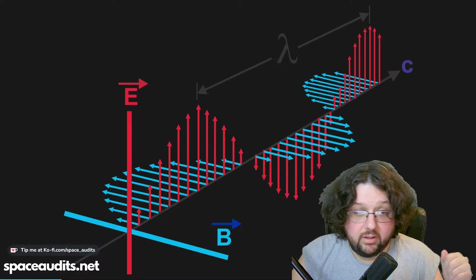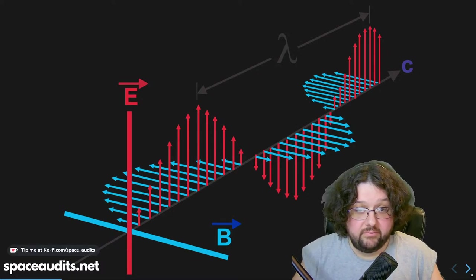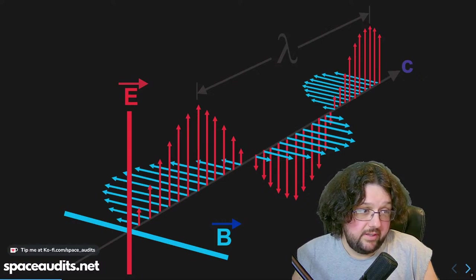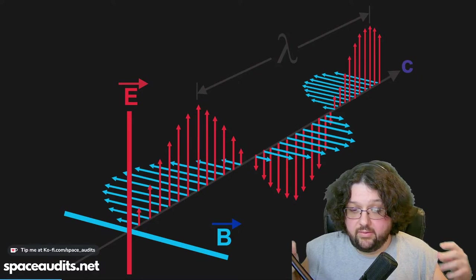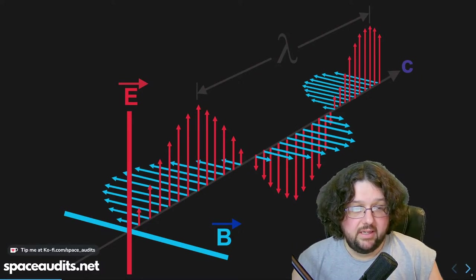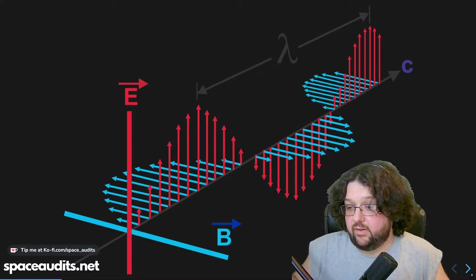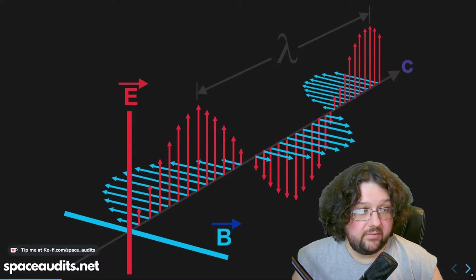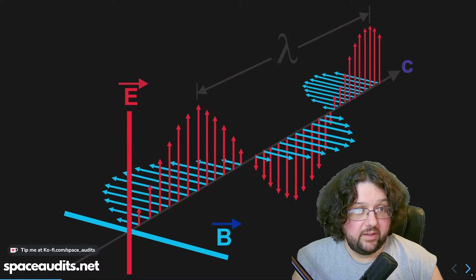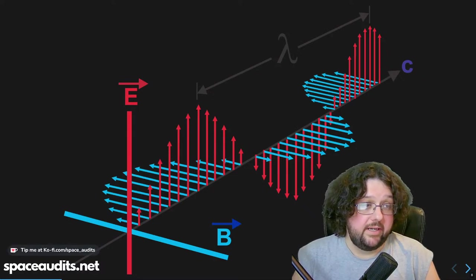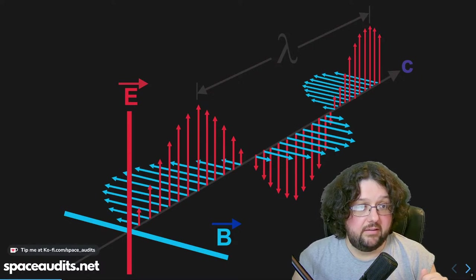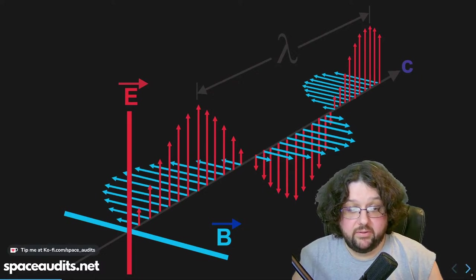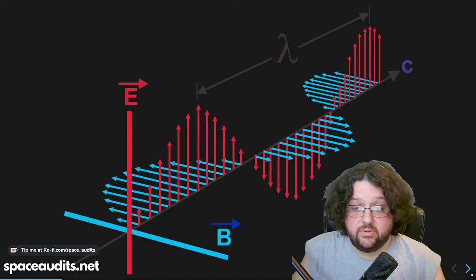At the intersection points where there's nothing, that's where the ether would be — what's allowing the electric field to induce a magnetic field. That's the primary thing we'll be discussing here: the measurement of wavelengths. An electric field and a magnetic field, with the wavelength being the distance between two consecutive peaks.